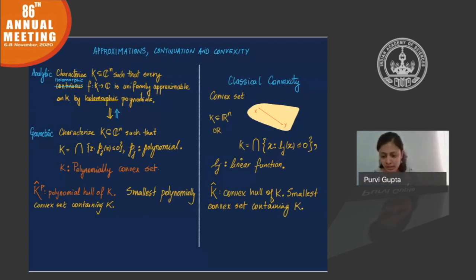As in classical convexity, I can define the polynomial hull of a set. A set may not be polynomially convex to begin with, but I can consider the smallest polynomial convex set containing it, and that would be the polynomial hull of a set.